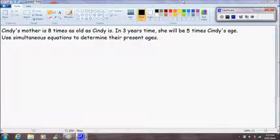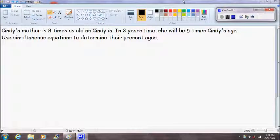The problem we are given is Cindy's mother is 8 times as old as Cindy is. In 3 years time she will be 5 times Cindy's age. Use simultaneous equations to determine their present ages.